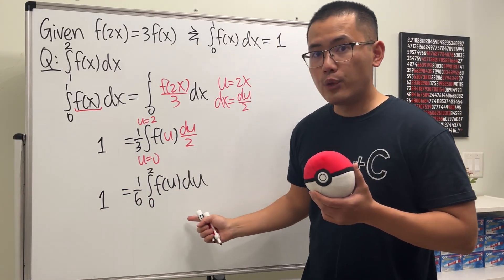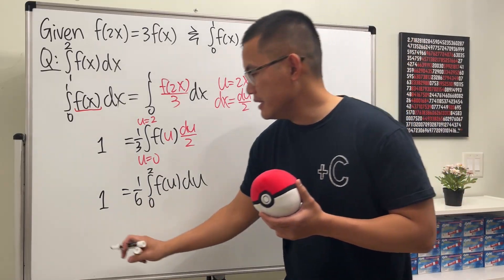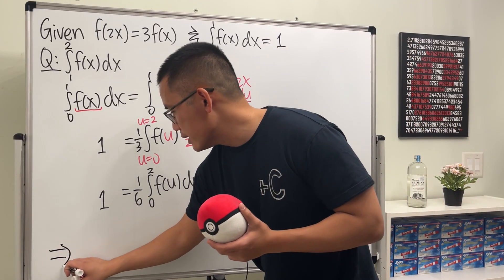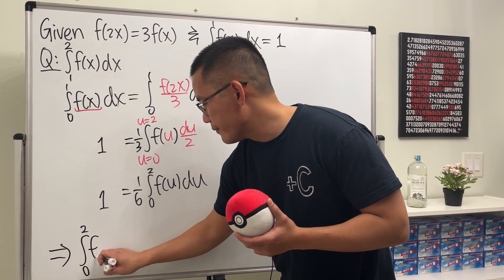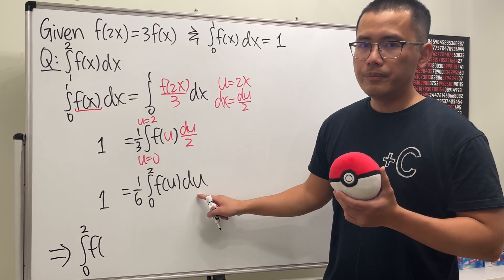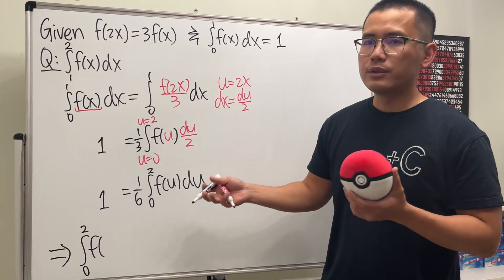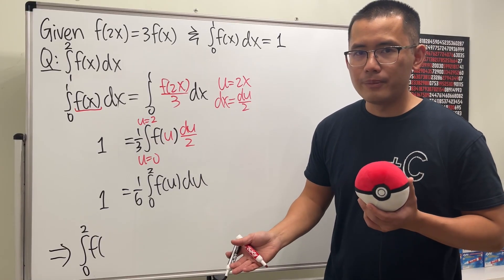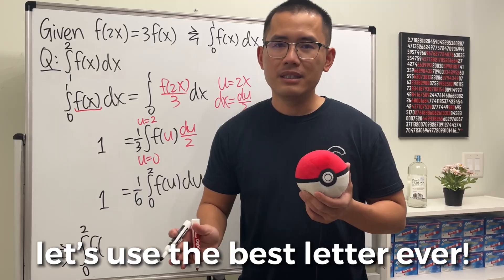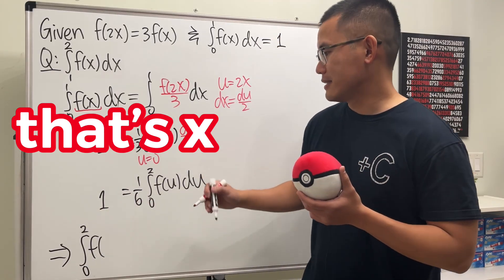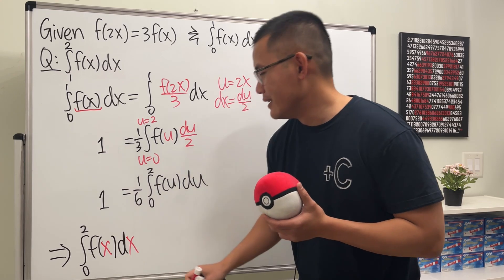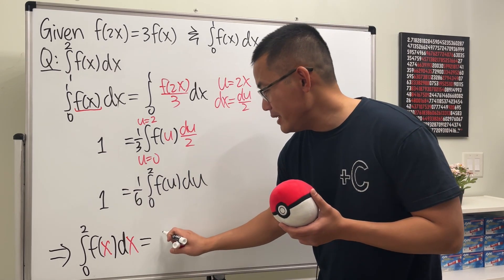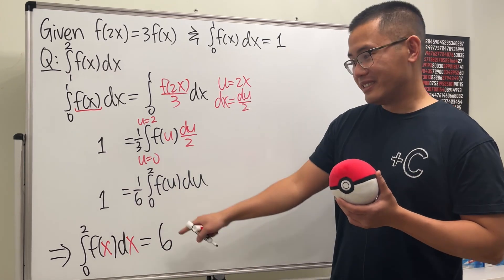By looking at the last equation, we can multiply both sides by 6. And this right here will tell us the integral going from 0 to 2, f. And right here, we use u. But we can use t, we can use w. It doesn't matter. It's just a dummy variable. Let's use the best letter ever. That's x. So let's put down f of x dx. All right? And that will just be equal to 6. This is so cool. Do we see it?